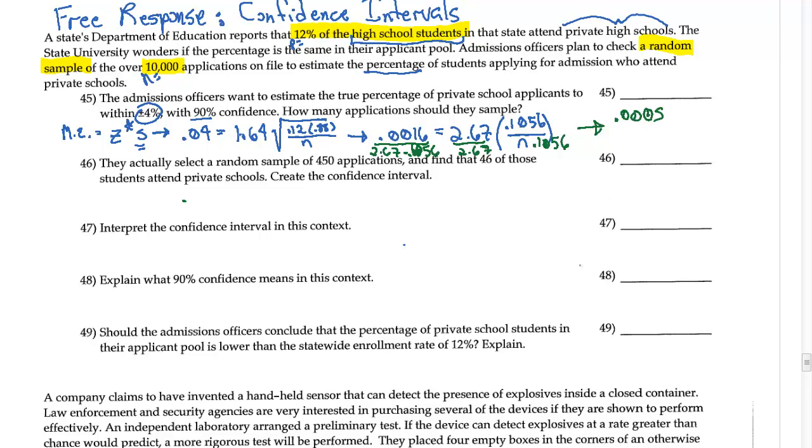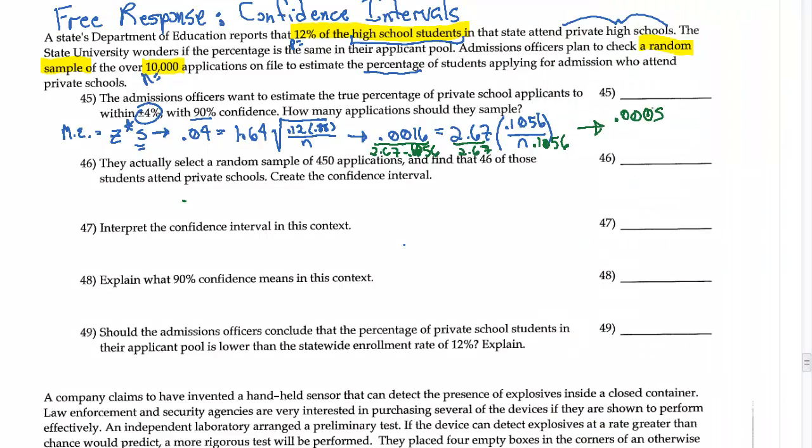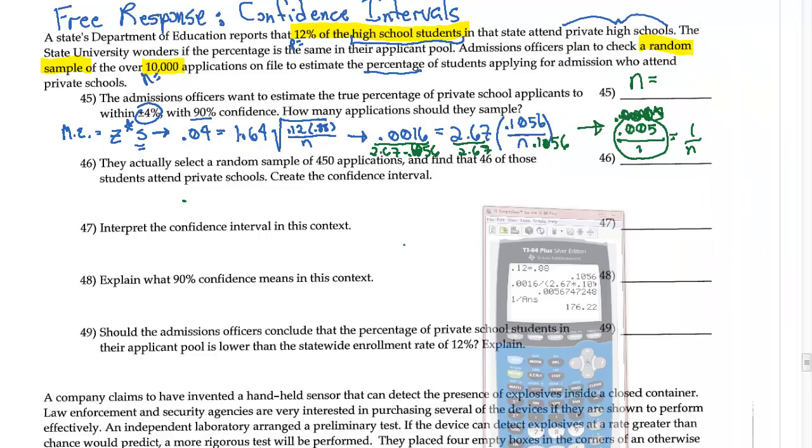So 0.00567 over 1 is equal to 1 over N. So then N is going to be equal to the reciprocal of this number right here. So I just need to take the reciprocal of that number right there. So 1 over my answer is 176, rounded to the nearest whole number.